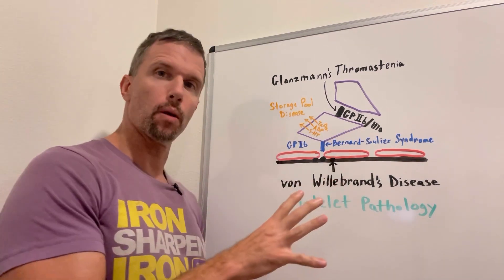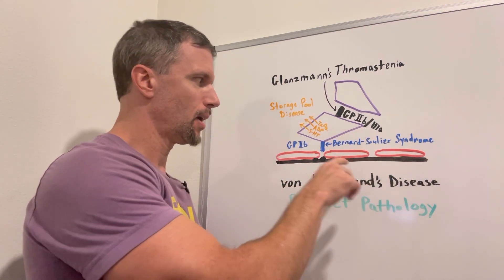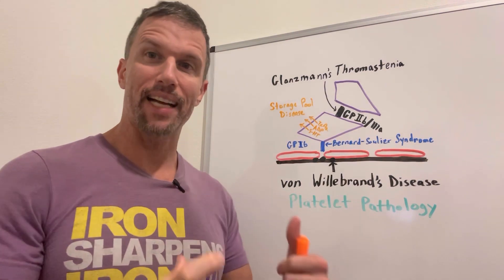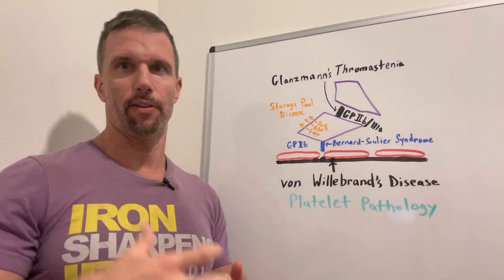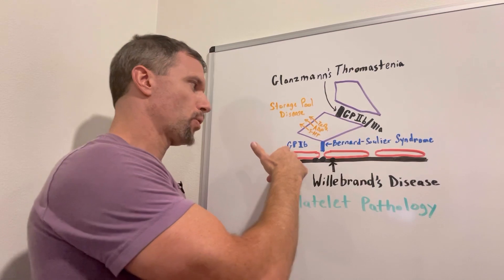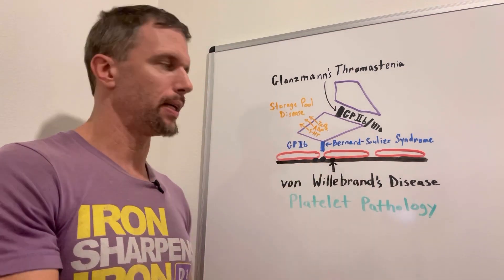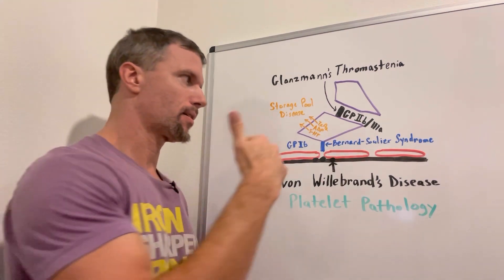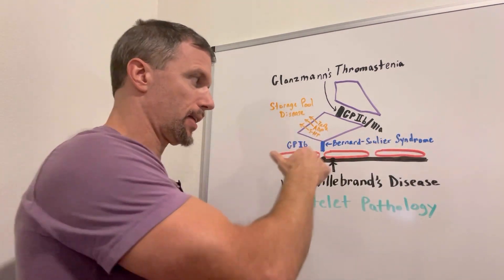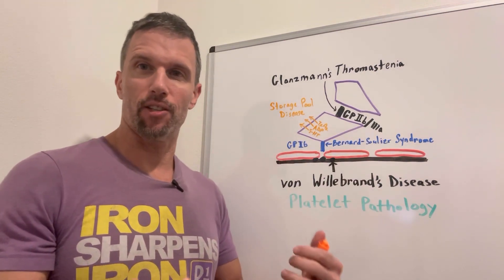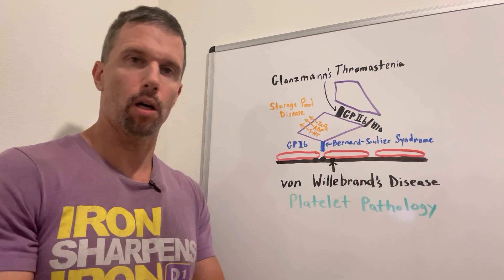What if your von Willebrand factor is okay? You don't have von Willebrand's disease, but the actual protein that attaches to von Willebrand factor has a defect or mutation. That protein is called GP1B, for glycoprotein 1B. That disease process is called Bernard-Soulier syndrome. You get essentially the same effect — you can't get that first platelet to stick to the injured endothelial wall.